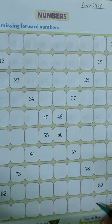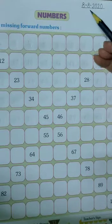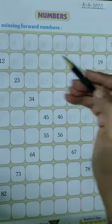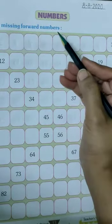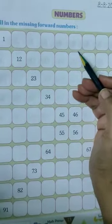Open page number 13 and write the date. Today's date is 8th August 2028. We will write the missing forward numbers in these boxes. As you can see,